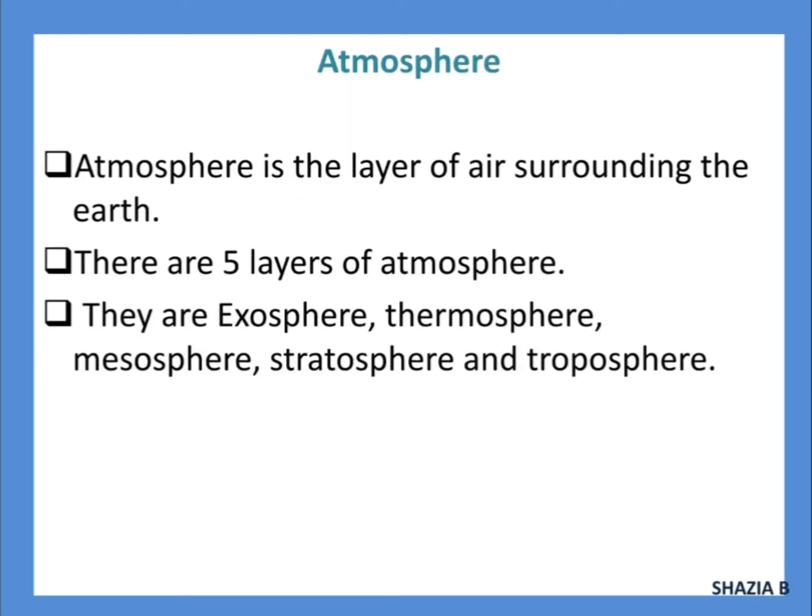Atmosphere is the layer of air surrounding the earth. There are five layers of atmosphere: exosphere, thermosphere, mesosphere, stratosphere, and troposphere. These layers of air around us are divided into certain sections — overall, it is called the atmosphere — and each layer is called by a different name, as mentioned.